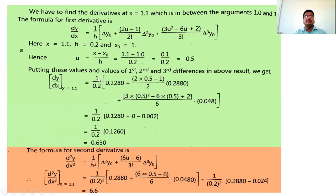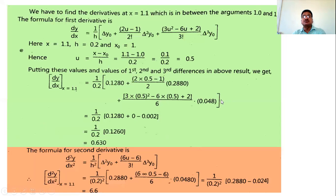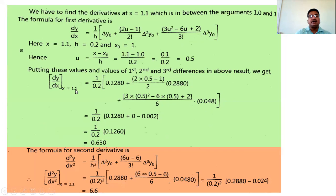Substituting into the formula: dy/dx at x = 1.1 equals (1/h) = (1/0.2), with Δy₀ = 0.128, and the corresponding Δ²y₀ and Δ³y₀ values. After performing all calculations using a calculator, we get the first order derivative at x = 1.1 equal to 0.630.